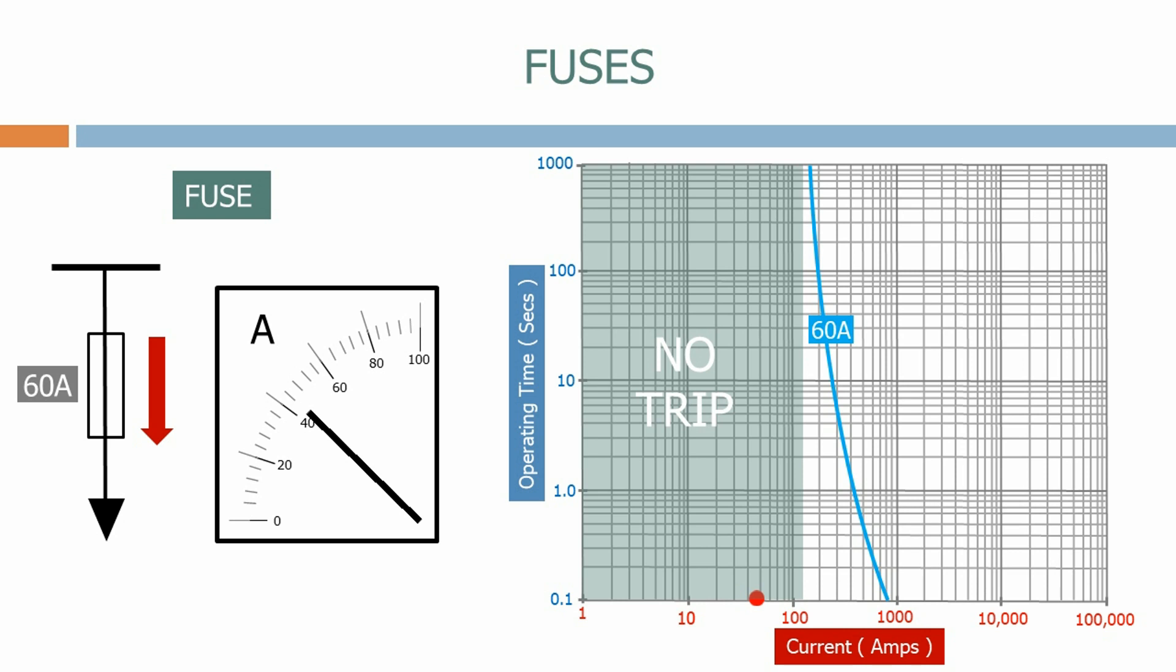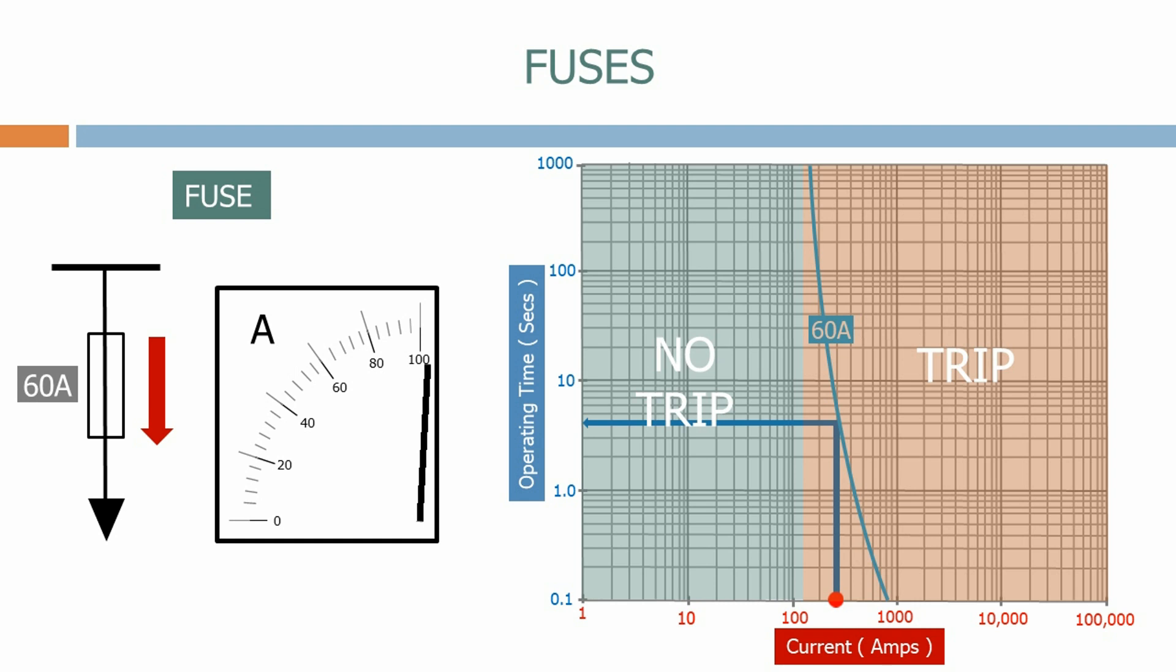Let's now increase the magnitude of the load and see what happens. As the load current steadily increases we leave the no trip zone and enter the next area of the characteristic, which is the trip zone. In this zone the fuse will react. The operating time of the fuse will depend on the level of the current. At 300 amps, the operating time is just under 4 seconds.